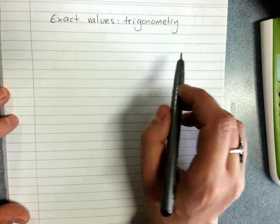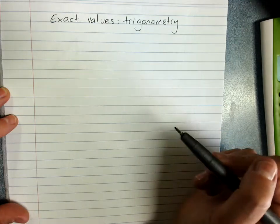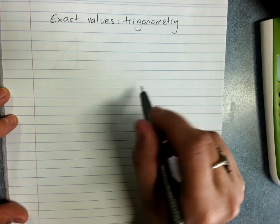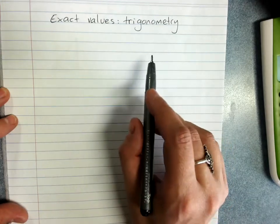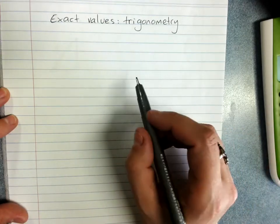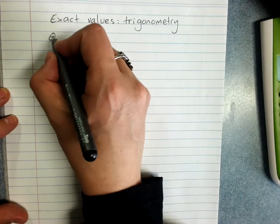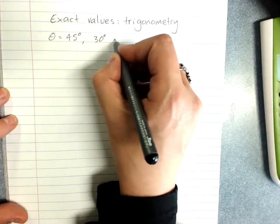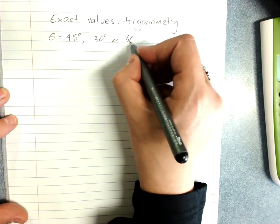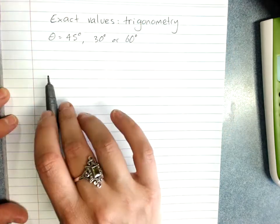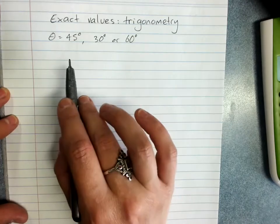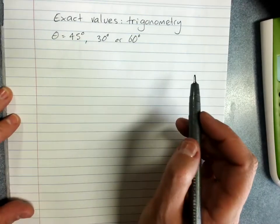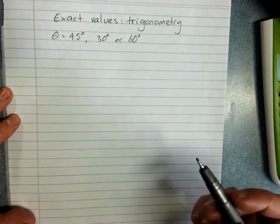We rely on Pythagoras' theorem to do this, and you will need to know or be able to work out from the triangles what the exact values are when theta is 45 degrees, 30 degrees, or 60 degrees. Unless you are very good at remembering the numbers, you'll have to know how to draw these triangles and then how to get the exact values.